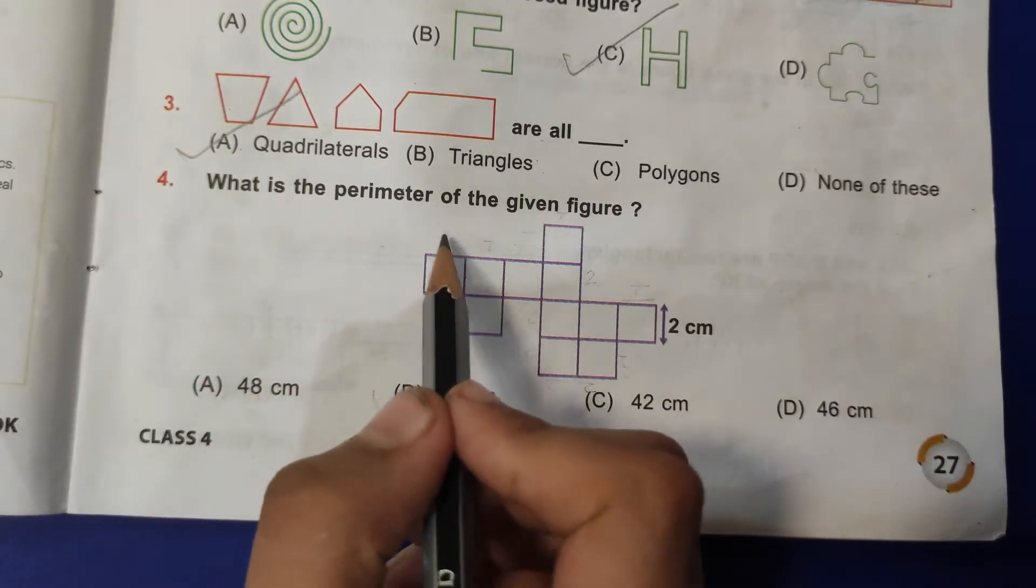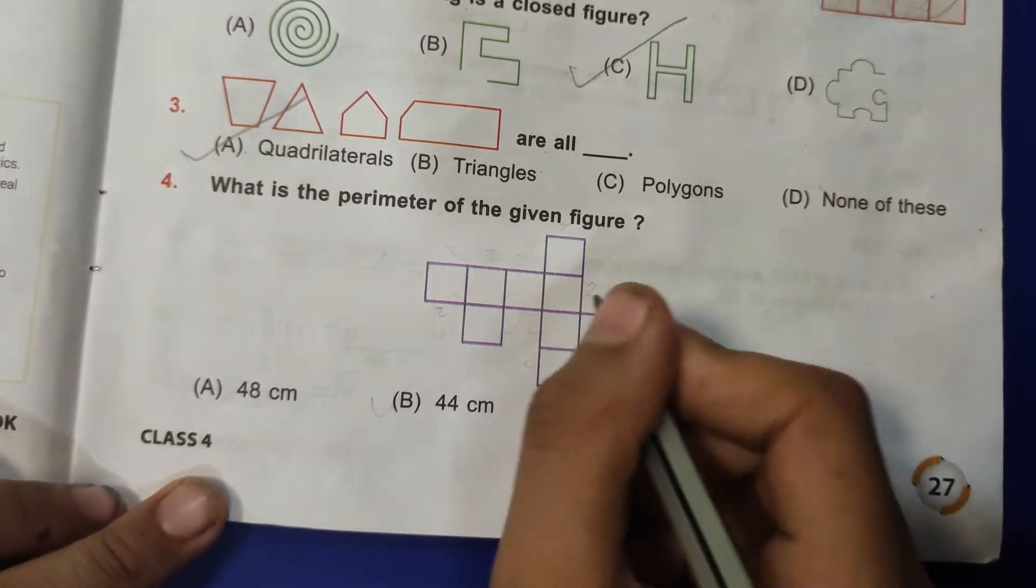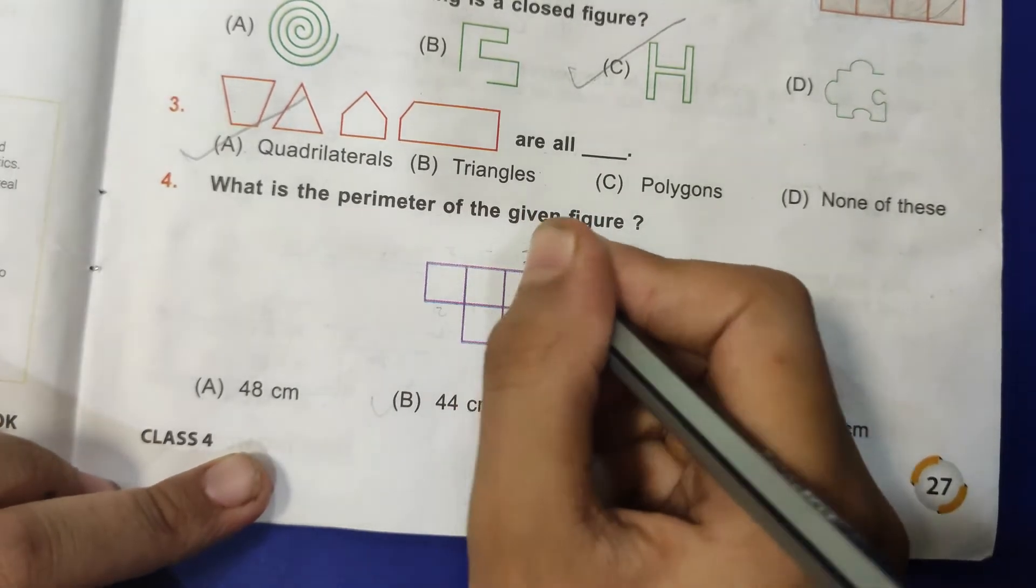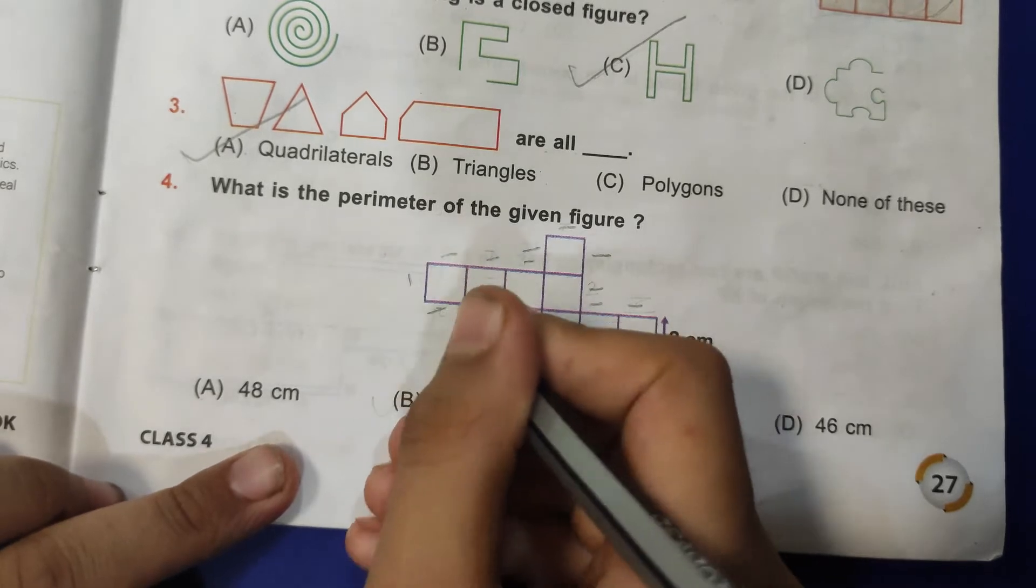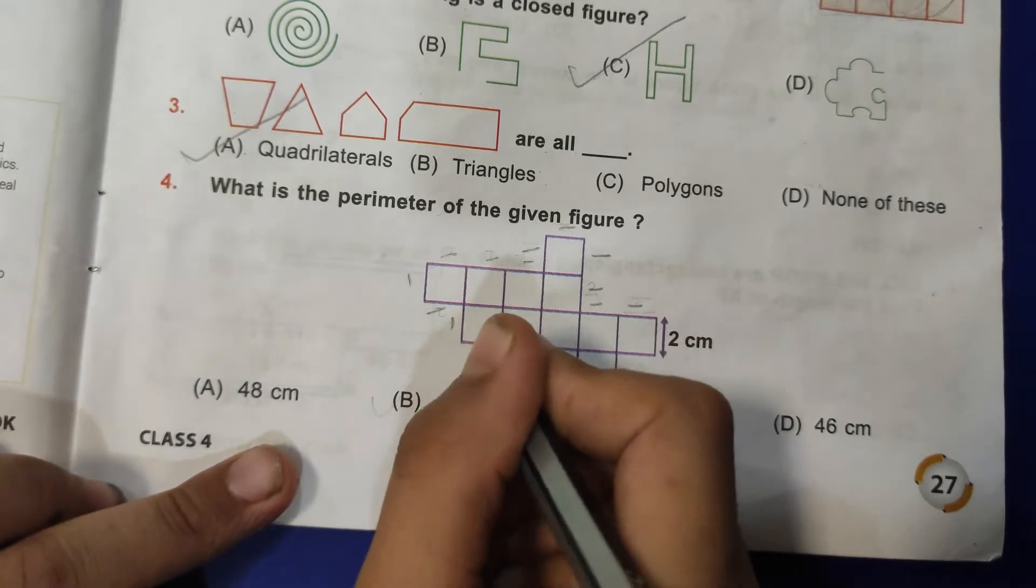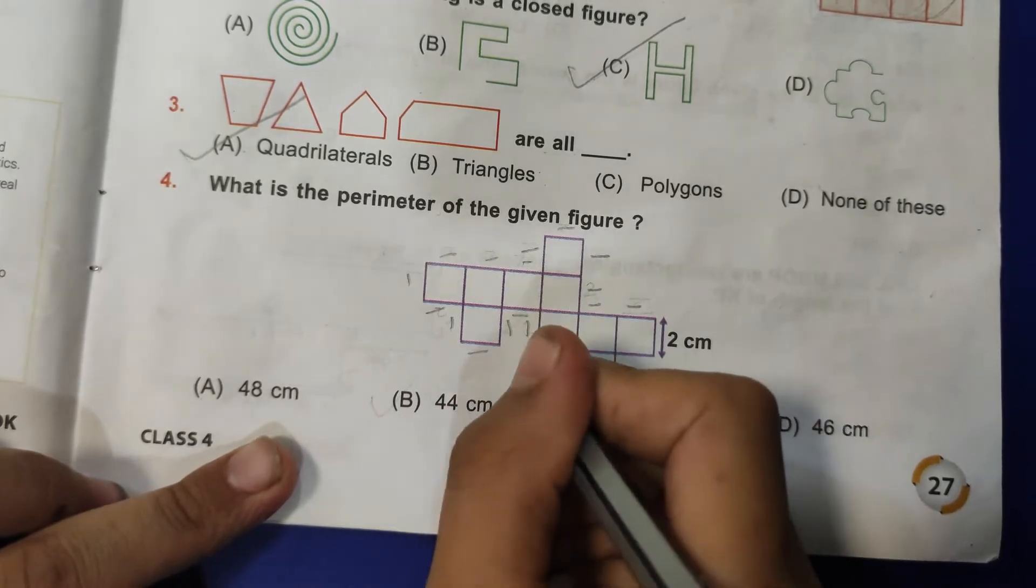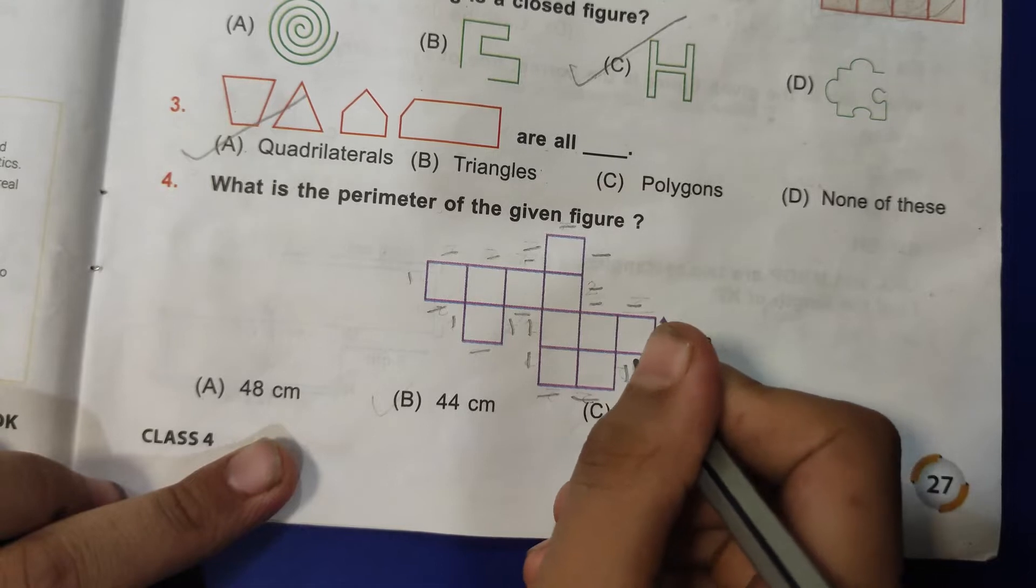Fourth question: what is the perimeter of the given figure? So here 2, 4, 6, 8, 10, 12, 14, 16, 18, 20, 22, 24, 26, 28, then 30, 32, 34, 36, 38, 40, and then 42, and then 44. Means B, 44 is the correct answer.